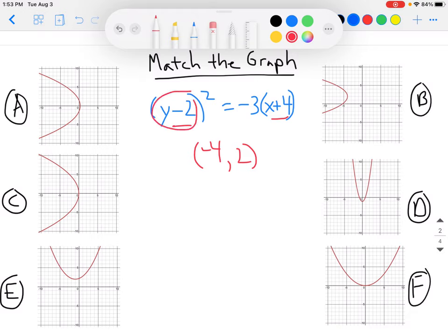Now what I did here is the 2 is associated with the y, so that's why it's the y coordinate. And then the 4 is associated with the x, so that's why it's the x coordinate. But then I had to change the sign on both of these. And so that's why I have negative 4, even though it says plus 4 here, and it's positive 2, even though it's minus 2 there.